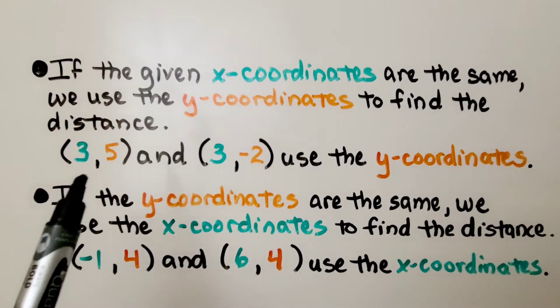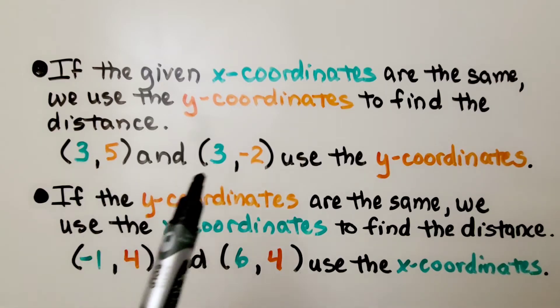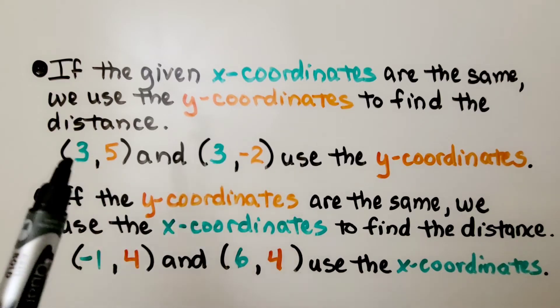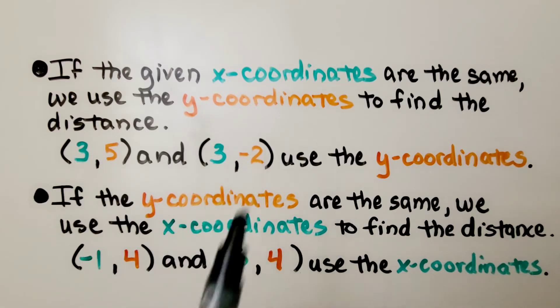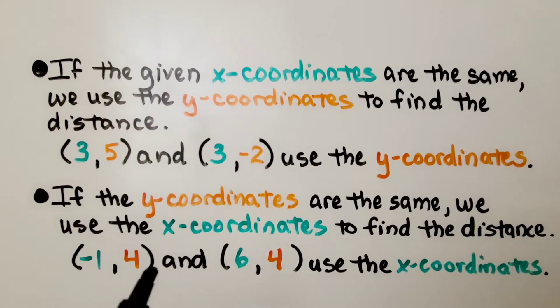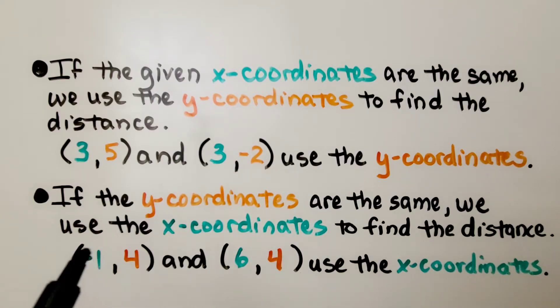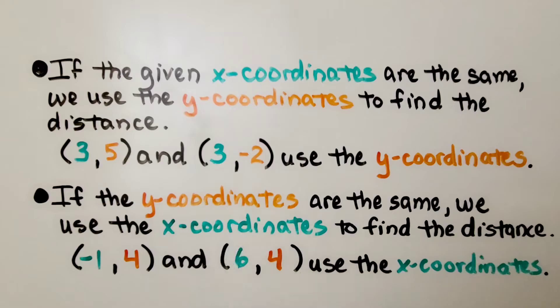Here we have the same x-coordinates — they're both 3 — so we're going to use the y-coordinates to find the distance. And if the y-coordinates are the same, we use the x-coordinates to find the distance.